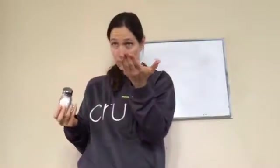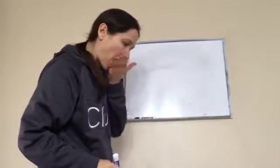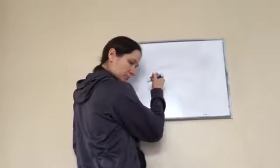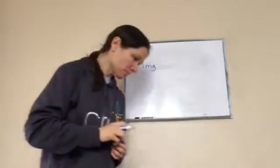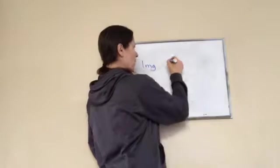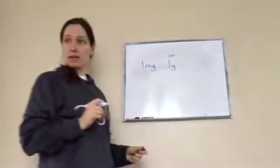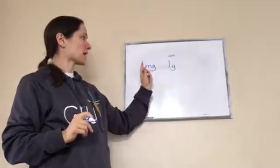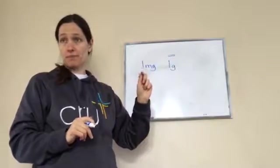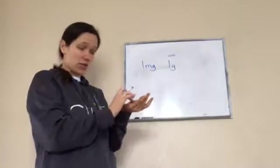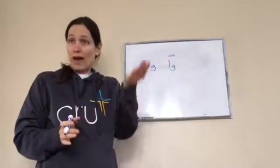For example, one grain of salt — I'm going to pull out a bunch, there's probably about 30 there. One grain of salt weighs one milligram. A paper clip that you stick on your paper weighs one gram. So guess how many grains of salt you'd have to hold in your hand to equal the weight of a paper clip? A thousand — a thousand of these little grains of salt to equal one paper clip.